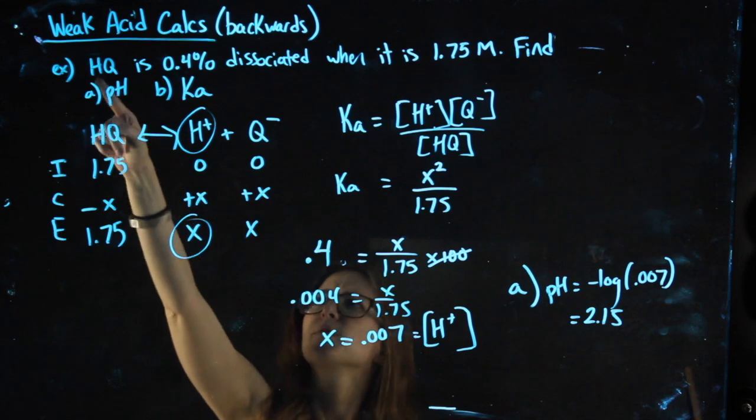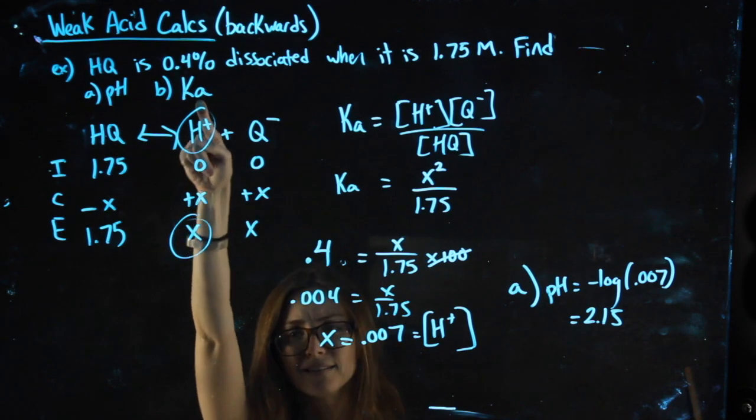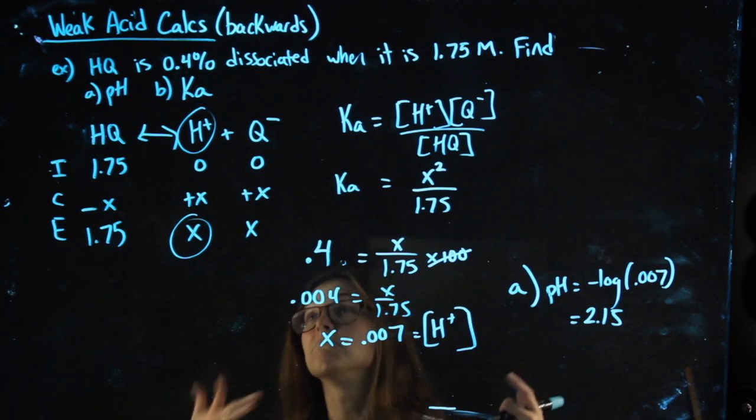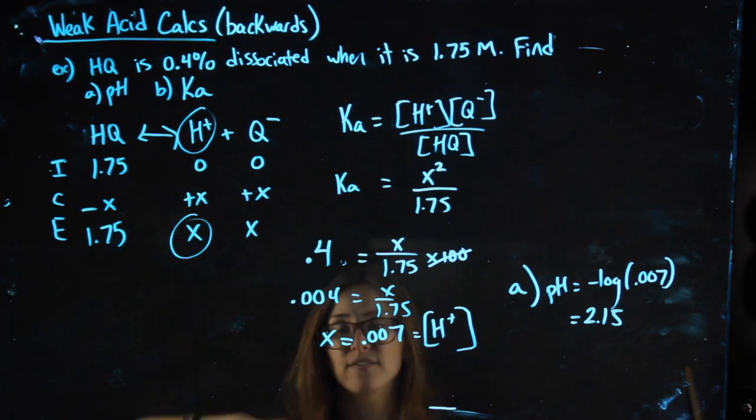Actually, another way we know we're dealing with an acid is I ask you to find KA. If it were a base, it would say KB. Speaking of which now, part B, we want to find KA.